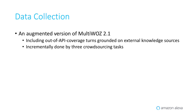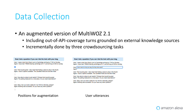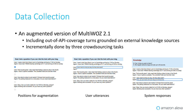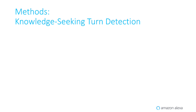For these tasks, we collected an augmented version of MultiWOZ 2.1 with three crowdsourcing tasks. First, we asked workers to specify a position to insert a new knowledge-seeking turn into a given MultiWOZ dialogue. Then we collected a user turn request at the given position. Finally, workers completed the conversation with an agent response based on given knowledge. Here are the statistics of the collected data and knowledge sources used for this experiment.